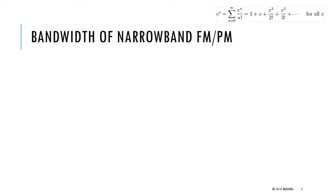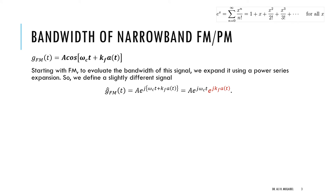What is the bandwidth of a narrowband FM signal? I'll take FM as an example, which you can generalize to PM. We'll do some math manipulation to represent the signal in a way that reveals the bandwidth. We can write the FM signal in complex exponential form — g sub FM — where the amplitude is outside and the angle is in the exponent. Multiplying two exponents gives the sum of exponents.